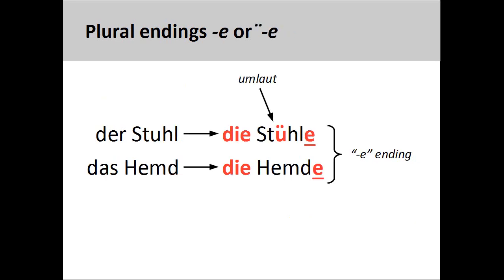The second group consists of nouns that add -e for a plural ending. This group contains a large number of German masculine and neuter nouns having only one syllable. The noun Hemd, shirt, is a good example: Hemde.